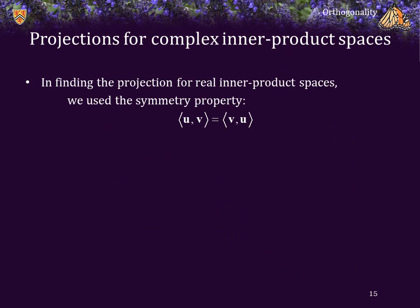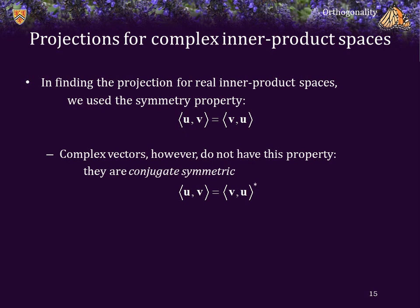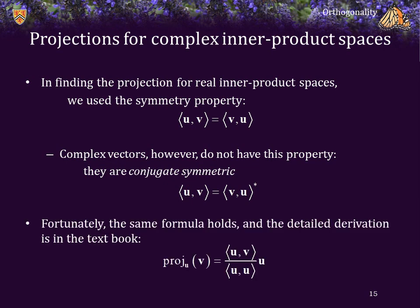In finding the projection for real inner product spaces, we used the symmetry of the inner product: ⟨u, v⟩ = ⟨v, u⟩. In complex vector spaces this is not necessarily true — the inner product is conjugate symmetric: ⟨u, v⟩ = conjugate of ⟨v, u⟩. The derivation of the projection for complex spaces is done in the textbook and gives the same formula, but it is important that v appears in the second operand of the inner product in the numerator.